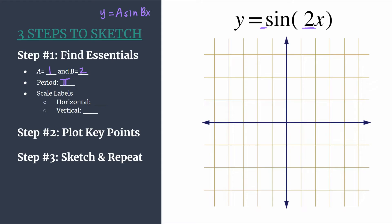Next we can find our scale labels. So this is what we count by, what we label our tick marks. We'll start with the horizontal scale labels. To do this with the three steps to sketch method, all you need to do is take the period and divide it by four. And this ensures that each of your key points in the next step will align with your horizontal tick marks. So our horizontal scale will be pi divided by four. And finally, setting our vertical scale, usually you can just use one or use a as your guide. So we will count by ones for our vertical scale.